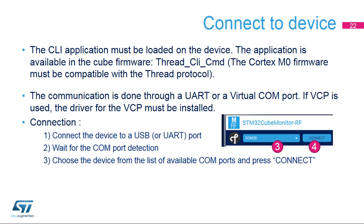Connecting to a Thread device is similar to that of a BLE device. First, the device must be loaded with the Open Thread firmware, which is provided in the STM32Cube package examples — the name is Thread_CLICMD. Note: if the Cortex-M4 firmware is changed, for example from BLE, you may have to update the Cortex-M0 firmware to ensure it is compatible with the Open Thread stack. The virtual COM port, or VCP, driver must be installed if a VCP is used. Connect your PC to the device, wait for the COM port enumeration, then select the correct port from the drop-down list and press Connect.